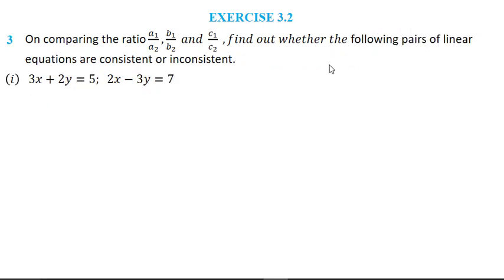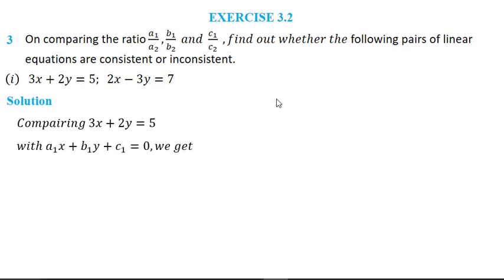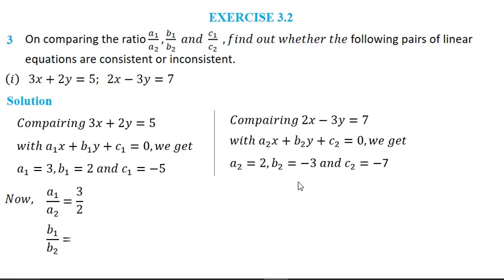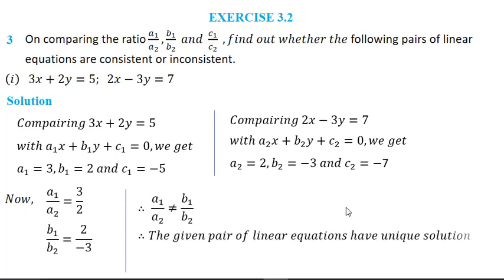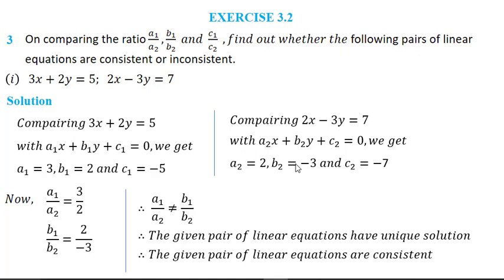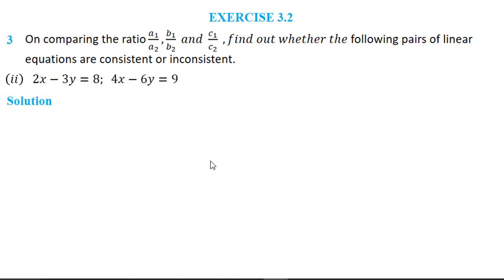Question 3 asks us to find out whether the following pair of linear equations are consistent or inconsistent. Consistent means they have a solution and inconsistent means they have no solution. When lines are parallel, they are inconsistent — that is when a1/a2 = b1/b2 but ≠ c1/c2. For the first sub-question, comparing the two equations gives a1/a2 ≠ b1/b2, so there is a unique solution and the given pair is consistent.